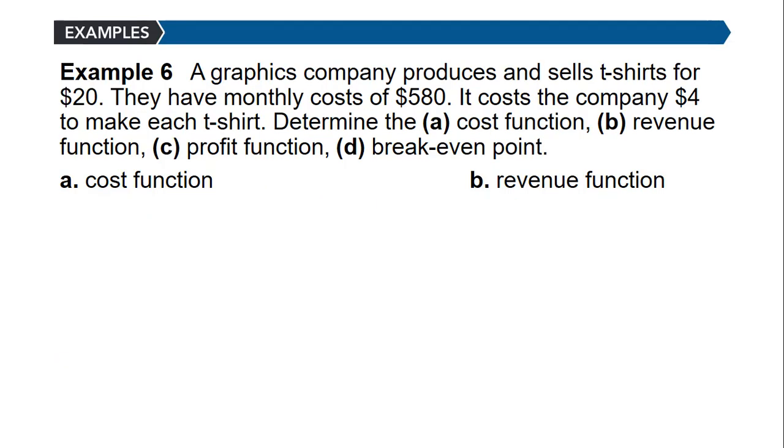Here's an example. A graphics company produces and sells t-shirts for $20. They have monthly costs of $580. It costs the company $4 to make each t-shirt. We want to determine the cost function, revenue function, profit function, and the breakeven point.